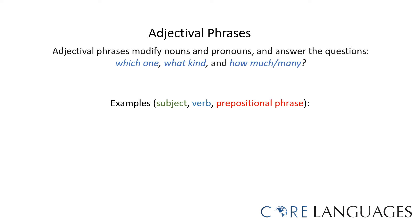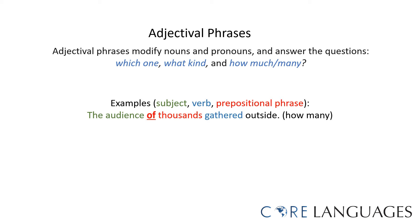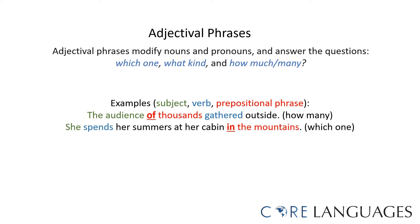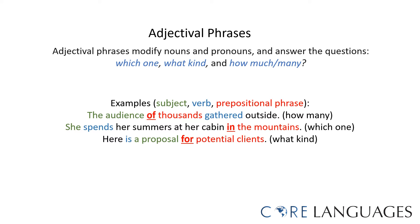For example, the audience of thousands gathered outside. 'Of' is the preposition, and 'of thousands' is the adjectival phrase that helps us describe the audience. She spends her summers at her cabin in the woods. This adjectival phrase, 'in the woods,' helps us describe the cabin. Here is a proposal for potential clients. The adjectival phrase 'for potential clients' helps us describe the proposal.